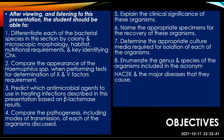To start with, we have the objectives. Number one, after viewing and listening to this presentation, the student should be able to differentiate each of the bacterial species in this section by colony and microscopic morphology, habitat, nutritional requirements, and key identifying characteristics. We also have to compare the appearance of the Haemophilus species when performing tests for determination of the X and V factor requirements.